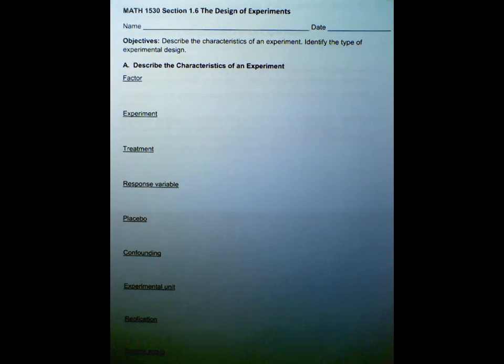This is our final section of chapter one on data collection, section 1.6, the design of experiments. We have a lot of definitions here. The objectives are to describe the characteristics of an experiment and identify the type of experimental design.